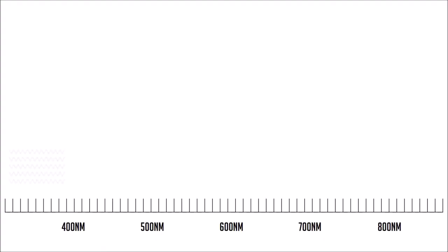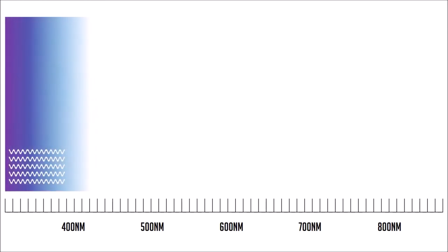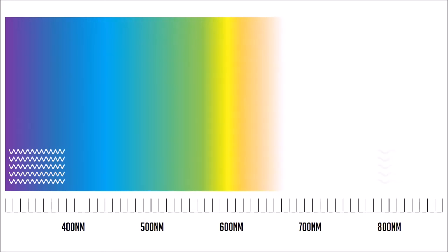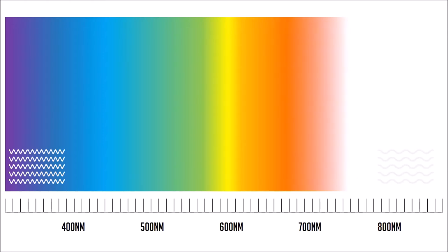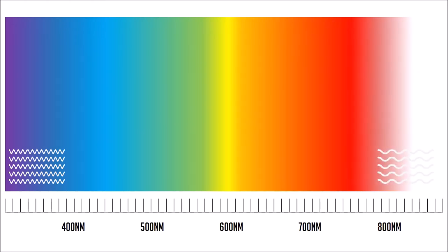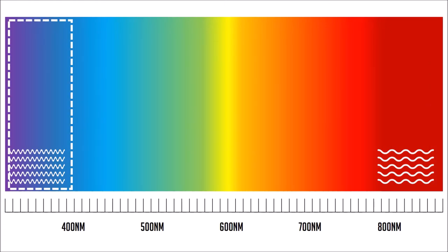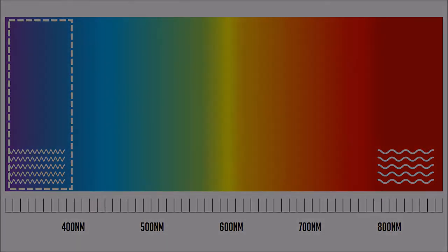When we talk about light underwater and especially the colors of marine animals and plants, we are only speaking about a part of the solar radiation that reaches the earth. The full spectrum reaches from the short wavelengths within the UV part, over the photosynthetically active radiation — the visible light — to the long wavelengths within the infrared part. Today we focus on the highly energetic wavelengths of ultraviolet radiation.